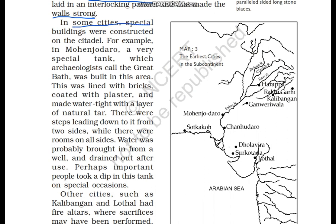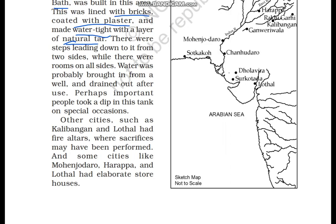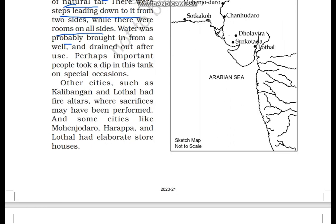In some cities, archaeologists found very special buildings constructed in the Citadel. They discovered a very special tank, which the archaeologists named the 'Great Bath.' The Great Bath was built with bricks and placed with plastered coatings. After the plastered coatings, there was a natural tar coating to make it watertight. Water was supplied from a well and released through a drain.